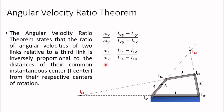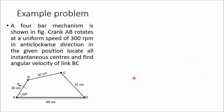Once you get the angular velocity, the velocity of a point can be found using the formula v = r·ω. For example, if you want to determine the velocity of point A on link 4, multiply the angular velocity of link 4 by the distance from the center of rotation I14 to point A.